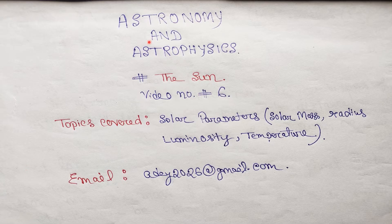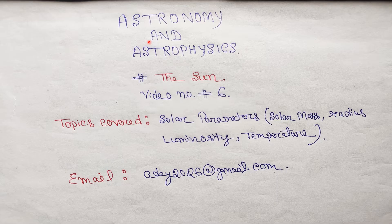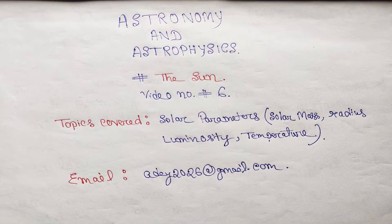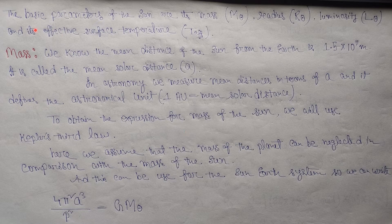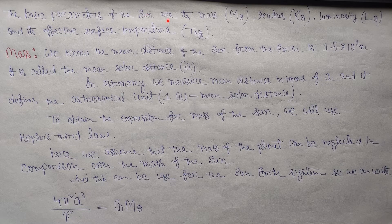Hey guys, welcome to our YouTube channel. From this video we are going to start a new chapter named The Sun. This is video number six, and in this video we are going to cover solar parameters which include solar mass, radius, luminosity, and solar effective temperature. If you have any confusion, suggestions, or doubts, you can mail us on this email. So what is solar parameter? The basic parameters of the sun are its mass, radius, luminosity, and the effective surface temperature.